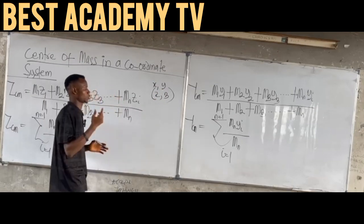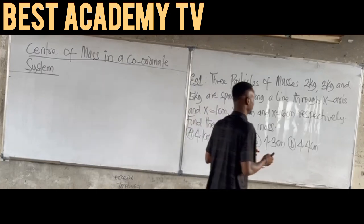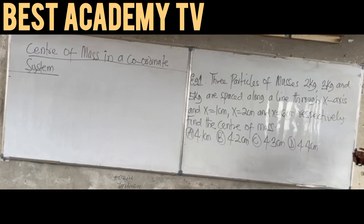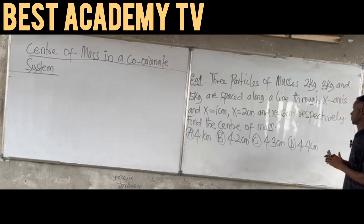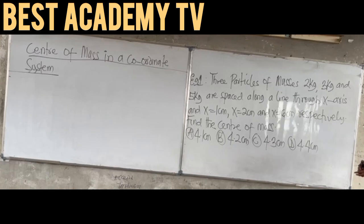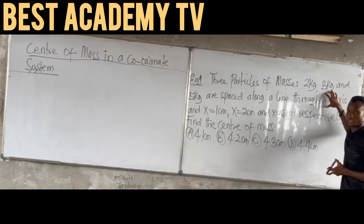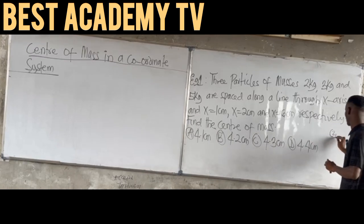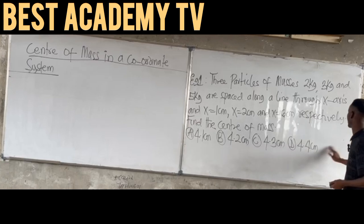Example 1: Three particles of masses 2 kg, 3 kg, and 5 kg are spaced along a line through the S-axis at S equals 1 cm, S equals 2 cm, and S equals 6 cm respectively. Find the center of mass. The axis here is the S-axis, so the center of mass I'll calculate will be S center of mass.